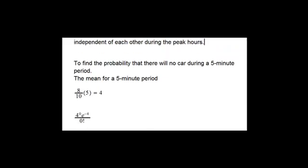So first what we have to do, we have to find the mean for a 5 minute period. So 8 over 10 is the average number of cars during 1 minute. Multiply it by 5. So it would be 4 minutes.